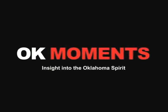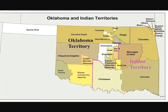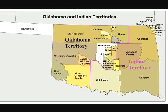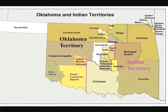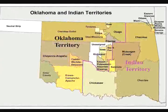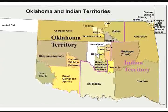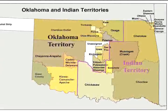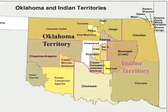What is today Oklahoma was at one time two territories. By 1905, Oklahoma Territory consisted of the western half of the present state, and Indian Territory occupied the eastern half. For almost 18 years, from 1889 to 1907, these twin territories, as they were called, existed side by side.